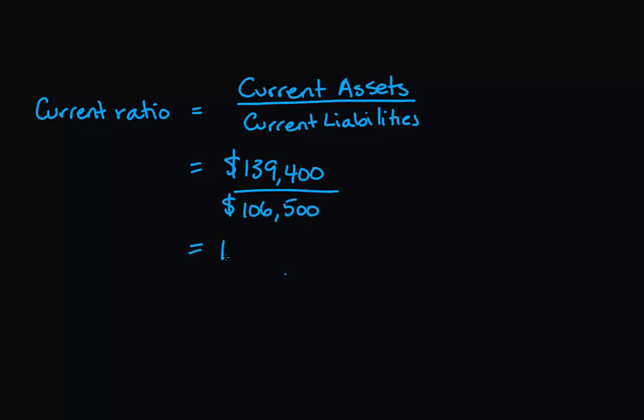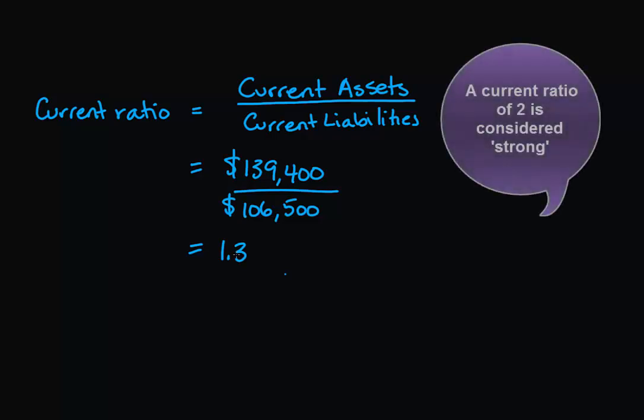And this gives us a current ratio of 1.3. So this means we can just cover our current liabilities with our current assets. Now ideally we want our current ratio to be somewhere in the range of 2.